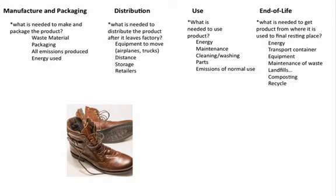End of life is what is needed to get the product from where it is used to its final resting place. Think energy of transport — we need a transport container. Boots, or trash generally, usually isn't thrown randomly in a large dumpster — it's contained in a bag. Then you need equipment to move that trash to the large waste receptacle. Maintenance of waste: if you're going to throw it in the landfill, you'll probably have to turn that landfill over, requiring large dump trucks and earth movers. If parts of your product can be composted or recycled, different aspects are needed for those as well.